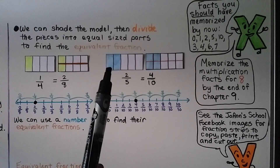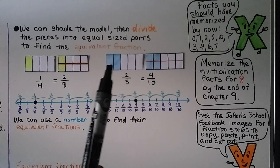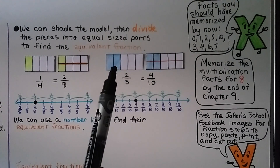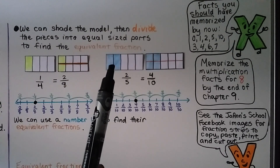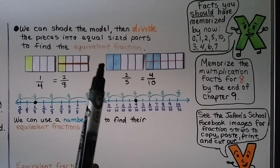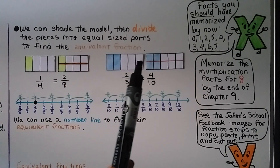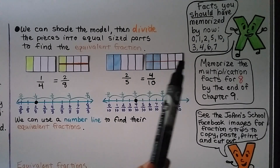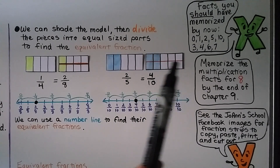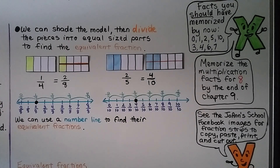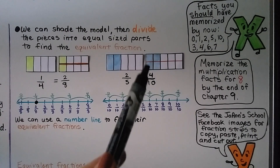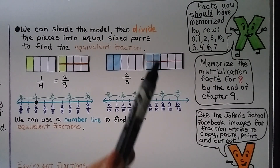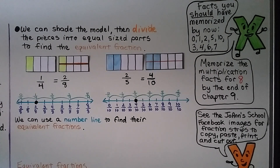We can do the same thing. We have two-fifths shaded — it's two out of the five parts that are shaded. If we draw a line straight through here vertically, we can split these into ten equal parts, and the same amount is shaded. Two-fifths is equal to four-tenths.